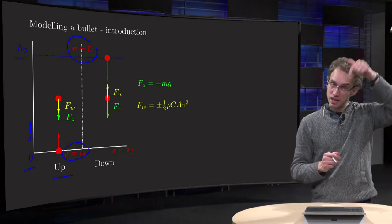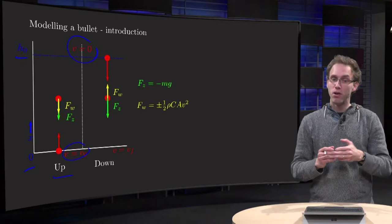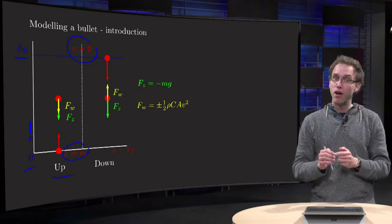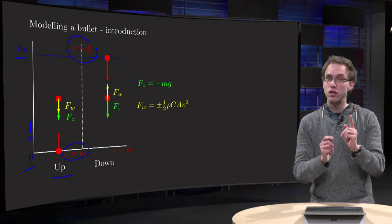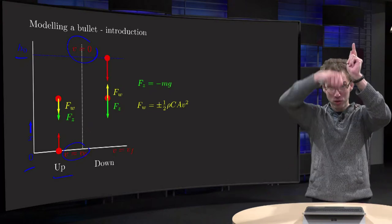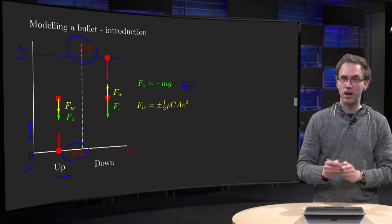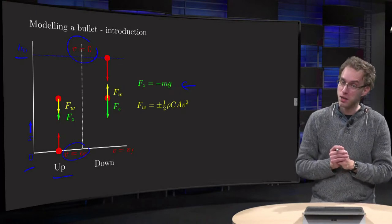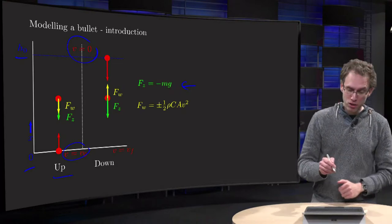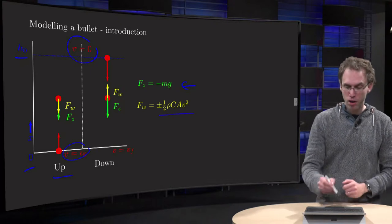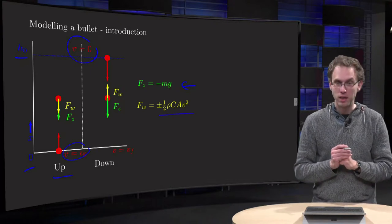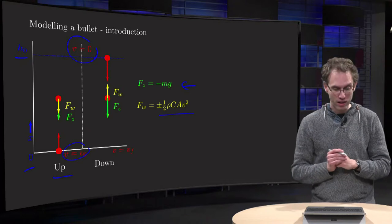Gravity is still working in the negative direction, of course, but now the frictional force is working in the upward direction because we are moving downward. So gravity is always Fz equals minus M times G, and the frictional force is either plus one-half rho times C times A times V squared or minus.